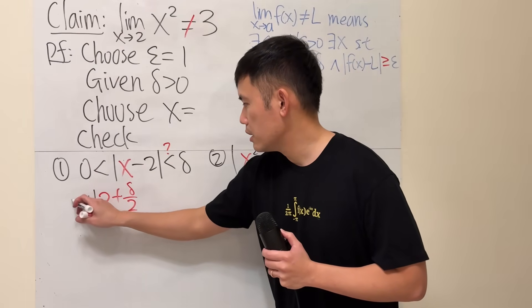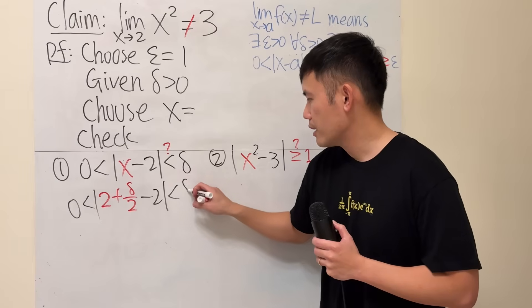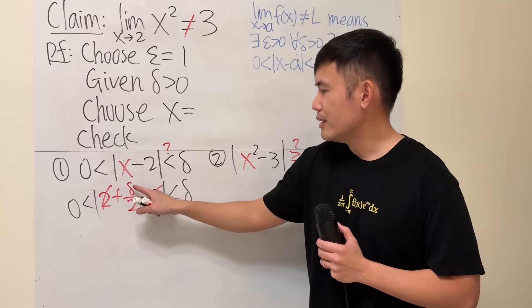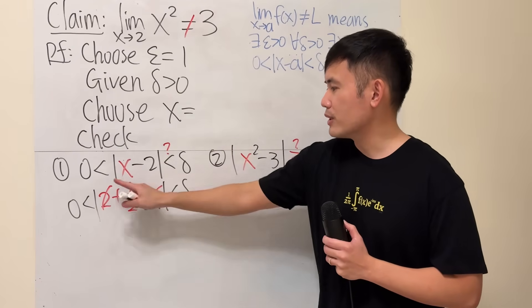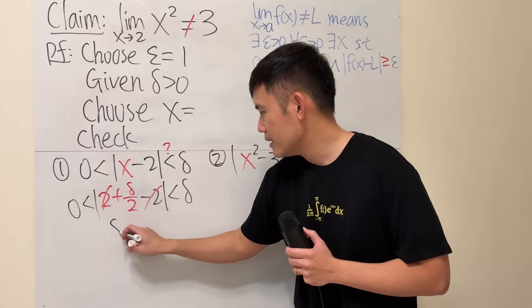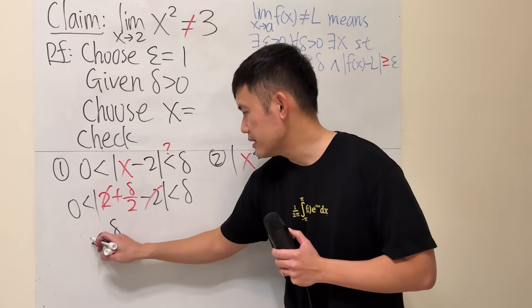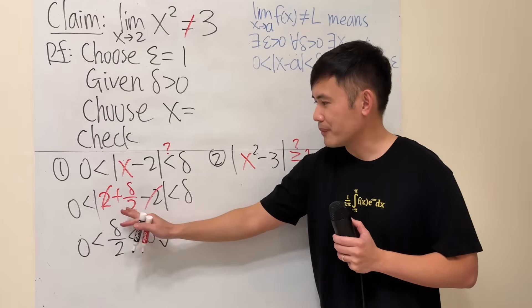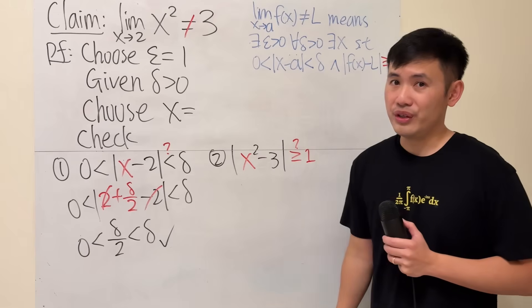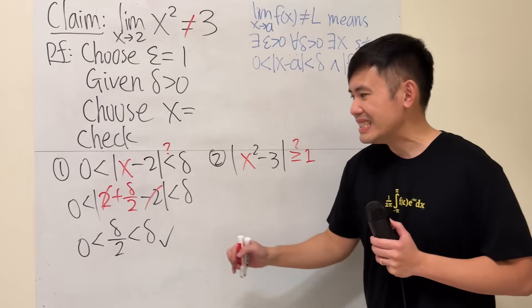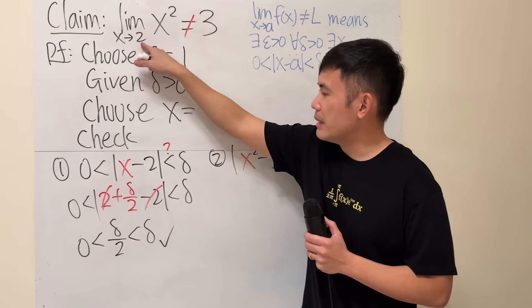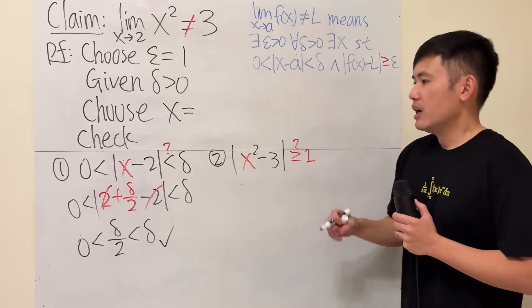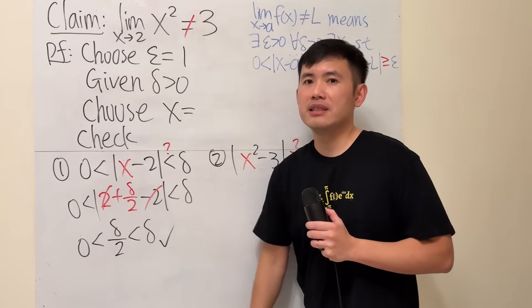Will this work? Well, let's just go ahead and check. If I subtract 2, 2 and 2 cancel very nicely. That's why I start with the 2. And then delta is greater than 0, so the absolute value doesn't matter. So here we have delta over 2. Is that in between of 0 and delta? Yes, of course. So now, this x right here looks pretty good. But is this always going to be whatever this number is and then just add delta over 2? No, not really. Sometimes you may have to subtract instead.